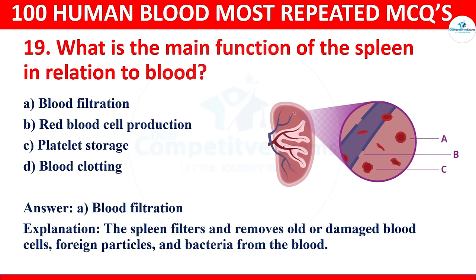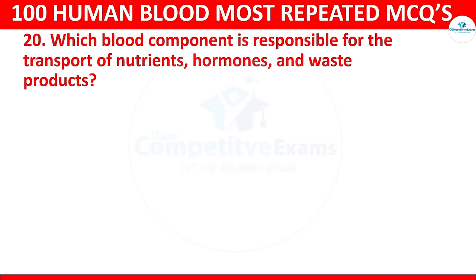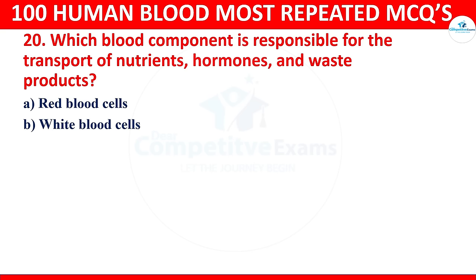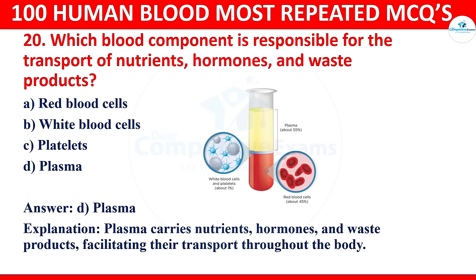Question 20: Which blood component is responsible for the transport of nutrients, hormones, and waste products? Options: red blood cells, white blood cells, platelets, or plasma. The correct answer is plasma. Plasma carries nutrients, hormones, and waste products, facilitating their transport throughout the body.